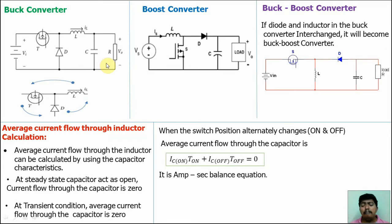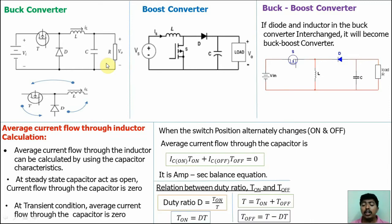By using the ampere-second balance equation, we can find the average current flow through the inductor for the buck, boost, and buck-boost converters. Before the calculation, you should also know the basic relations for T_on and T_off ratios, which are already discussed in the output voltage calculations video. Now we will discuss the average current through the inductor calculation for the buck converter. For the performance measures calculations, you should remember the circuits.